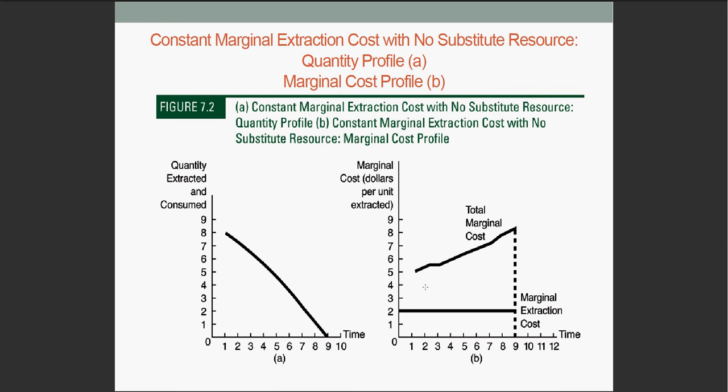On the right, we have a plot of both the total marginal cost and the marginal extraction cost. For simplicity's sake, we will assume constant marginal extraction cost for a majority of this discussion. The total marginal cost rises, as you can see here as this upper plot, this upper line.